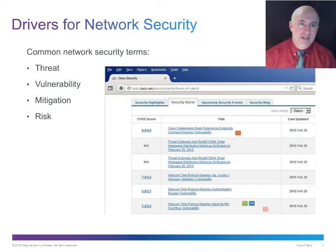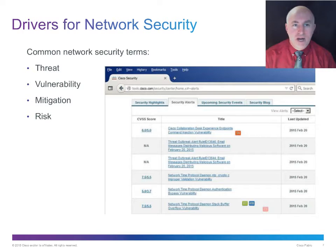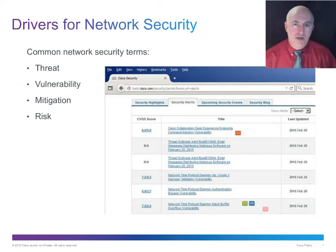A threat is any kind of danger to your data or infrastructure. A vulnerability is a weakness, like data that's not encrypted or infrastructure without a firewall. Mitigation means to lessen — we can never really eliminate threats, but we can mitigate our risk by adding a firewall or doing 24/7 monitoring. Risk is an assessment of how vulnerable you are to a particular threat.